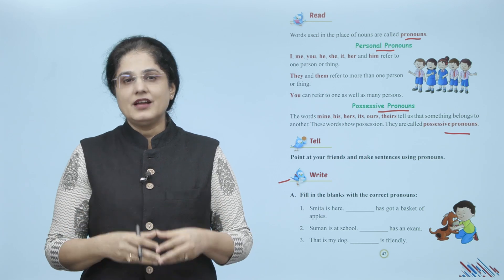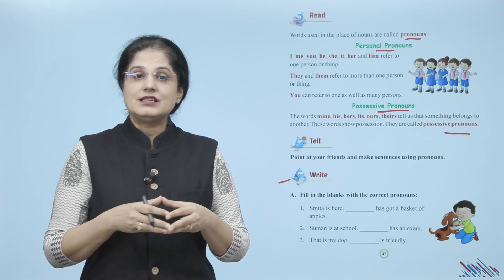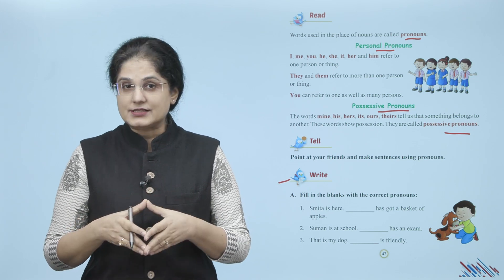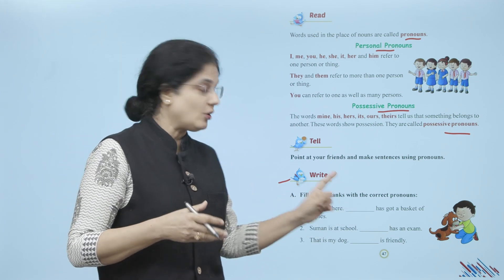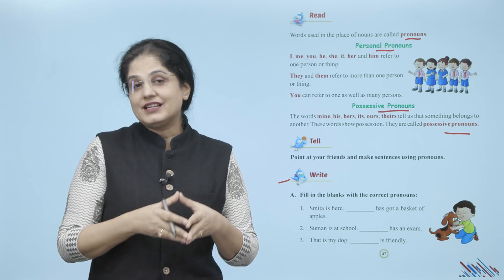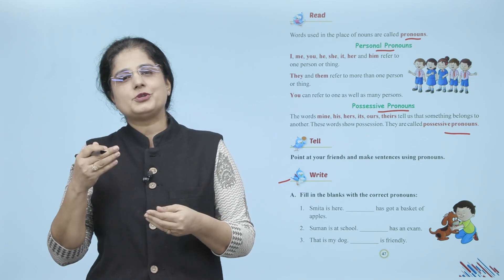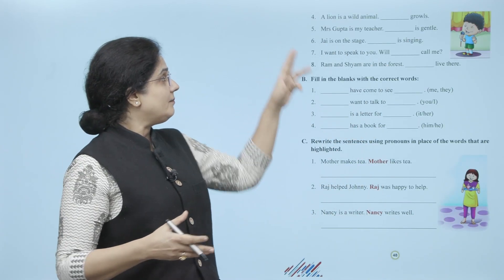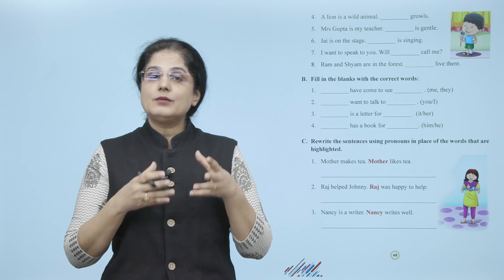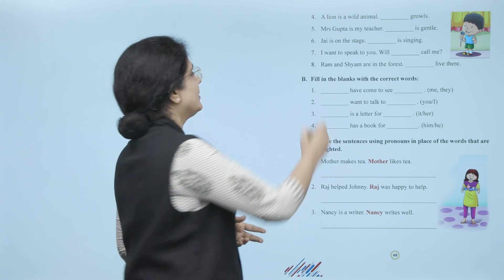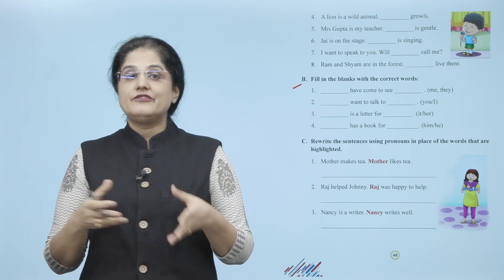For example: 'Smitha is here. Dash has got a basket of apples.' Smitha ki jagah pe yahan correct pronoun aayega — 'she'. So: 'Smitha is here. She has got a basket of apples.' Isi tarah se baaki sentences parhenge aur blanks mein jo appropriate pronouns hain unhein likhenge.